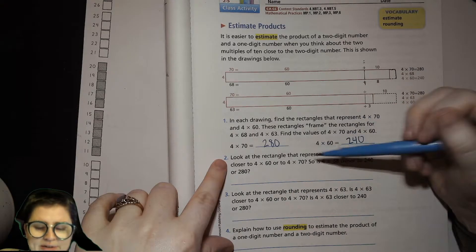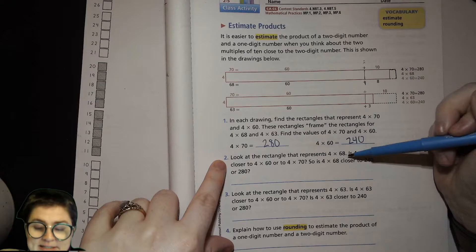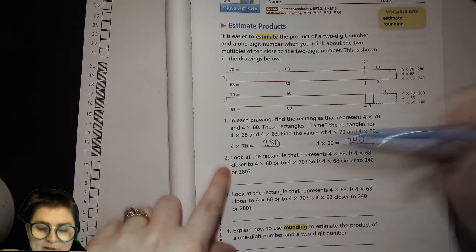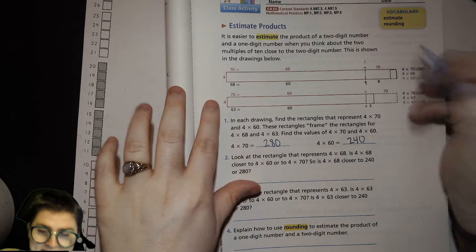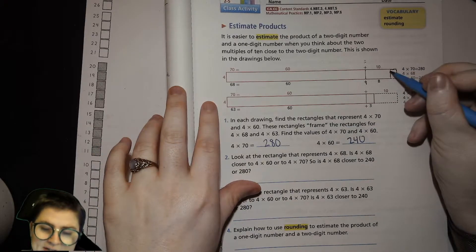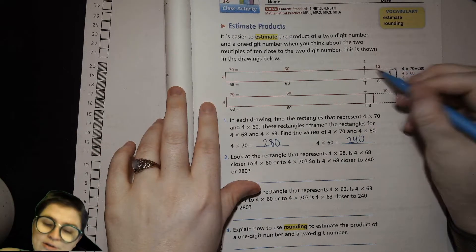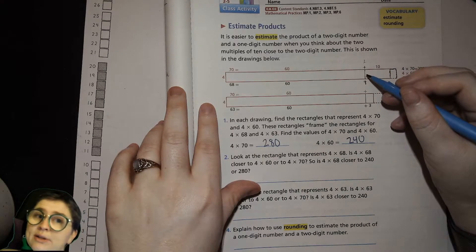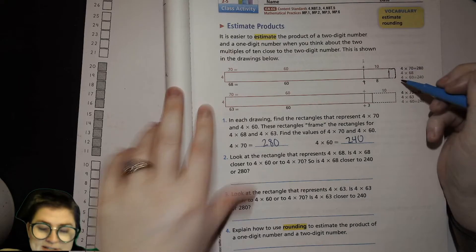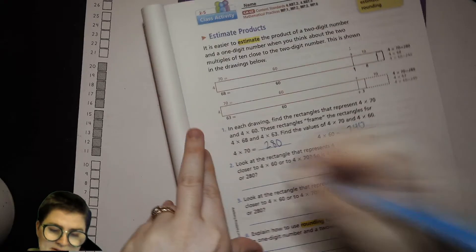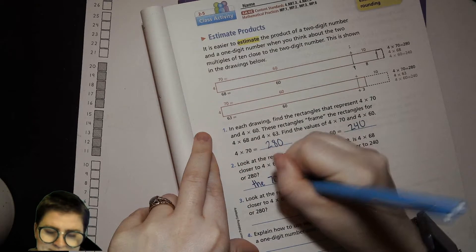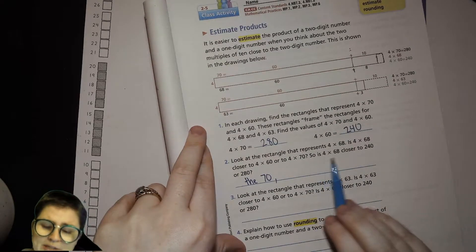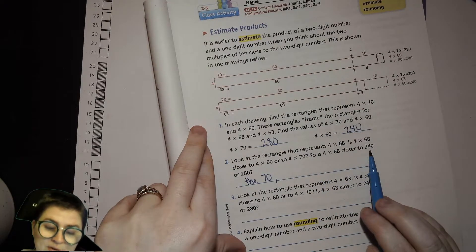And now look at the rectangle that represents 4 times 68. Is 4 times 68 closer to 4 times 60 or 4 times 70? I did that already. This line right here, is it closer to the 70 line or closer to the 60, you think? To the 70 line. So is 4 times 68 closer to 240 or 280?